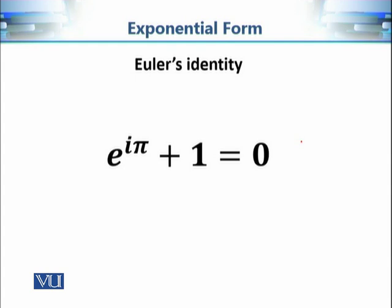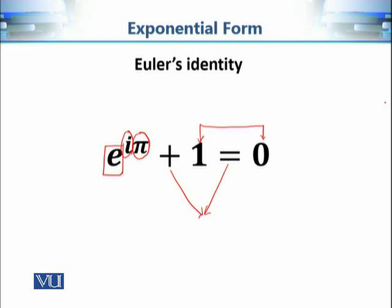Euler's Identity involves several key mathematical symbols. The symbol pi has been used in works dating back to Hippocrates in 400 BC. The symbol iota is the main focus of this course of complex analysis. The symbol e is the base of the natural logarithm — an important constant. The identity also involves the two basic operations of mathematics, and the two foundational whole numbers 0 and 1. Every symbol in this identity is important.